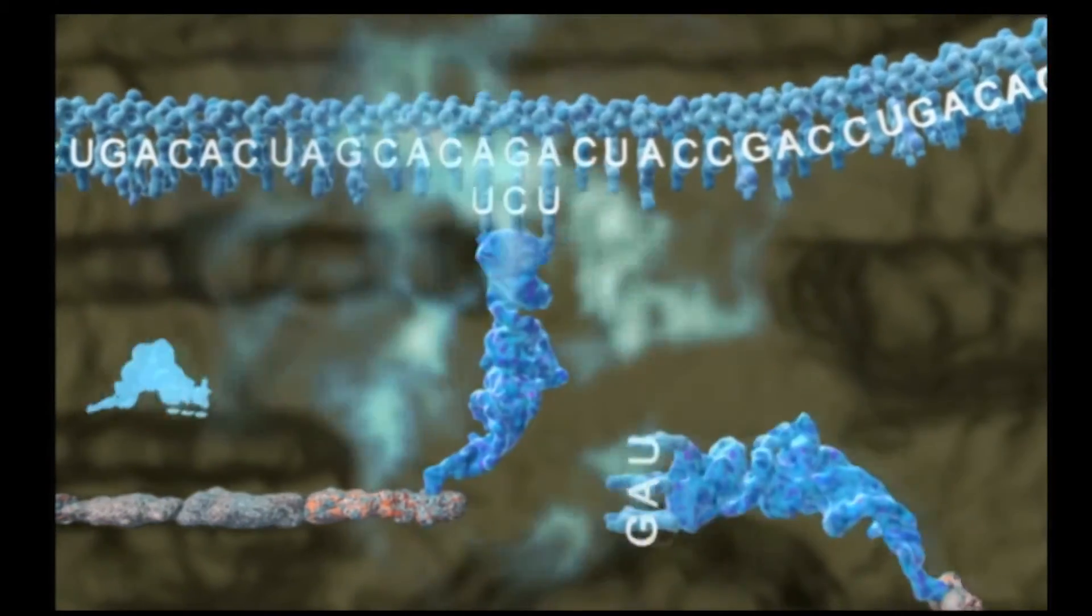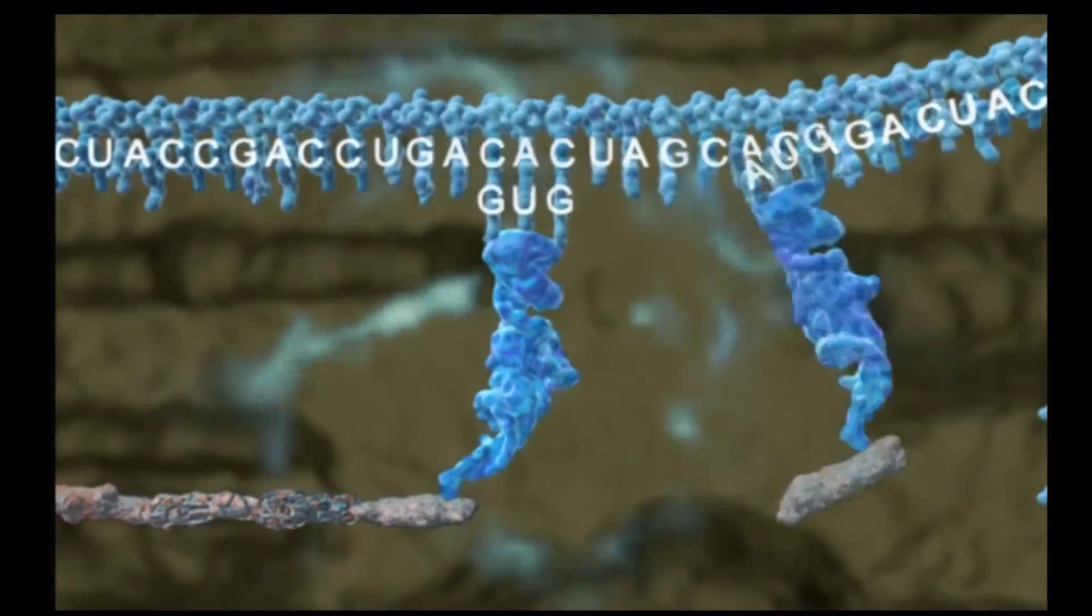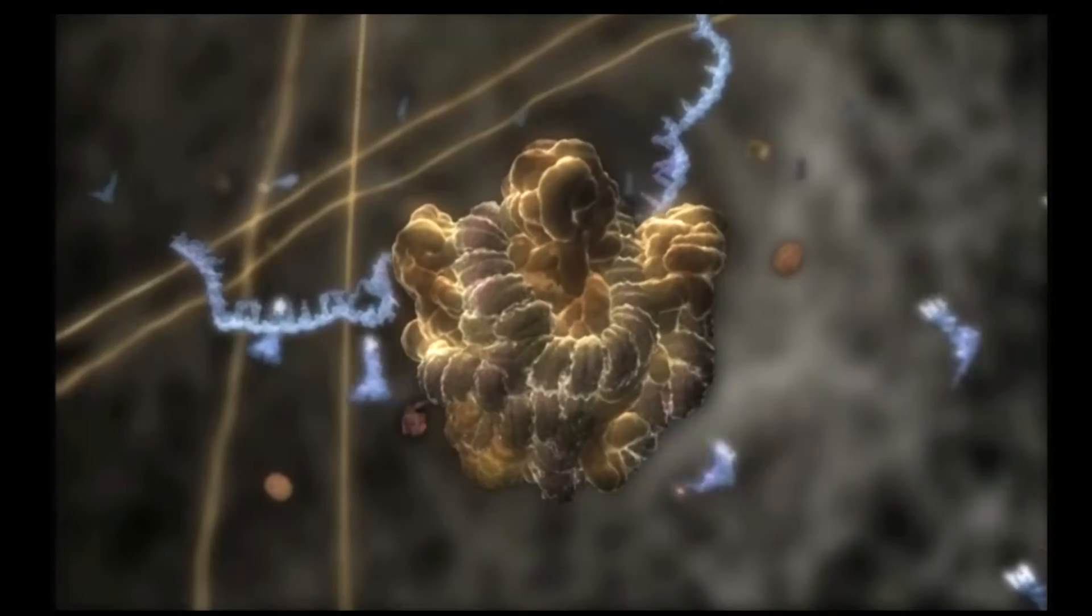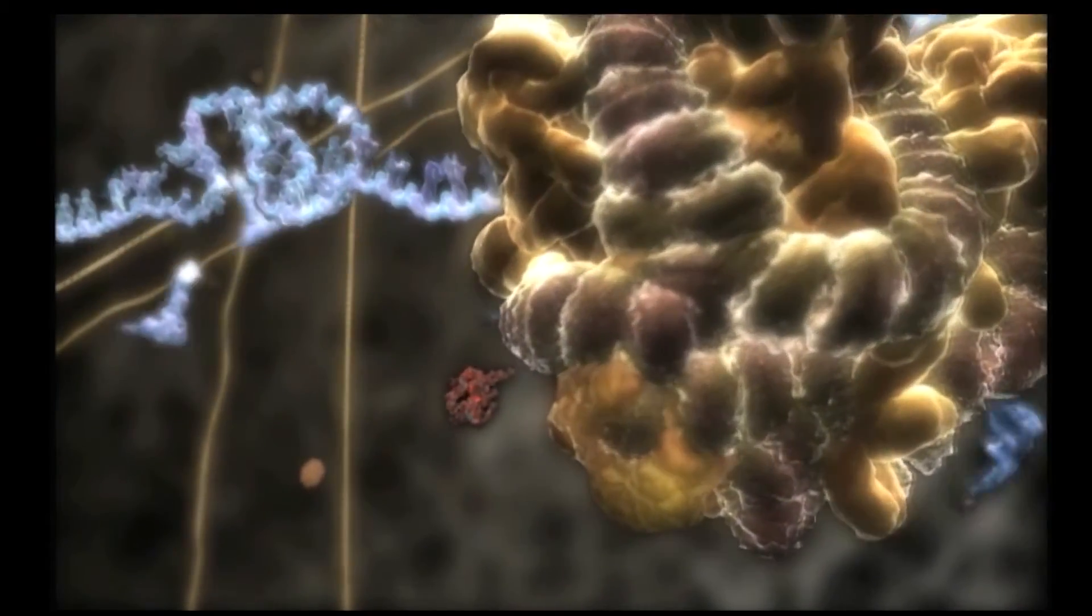These amino acids are transported from other parts of the cell by molecules called transfer RNAs which link specific sequences of bases to corresponding amino acids. The sequential arrangement of amino acids determines the type of protein constructed.